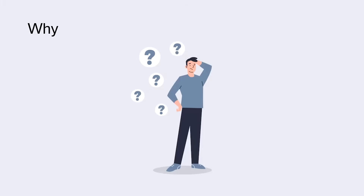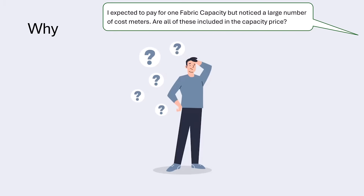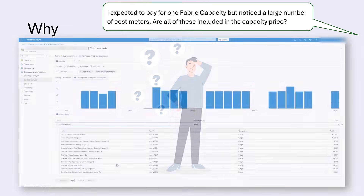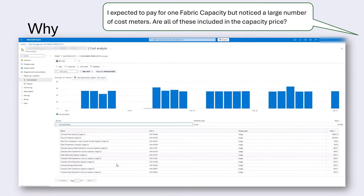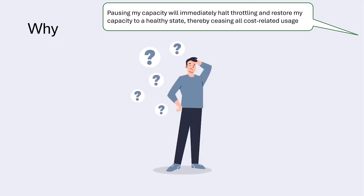We know cost transparency matters. Many users have questions or misconceptions around Fabric billing. Maybe you expected to pay for one Fabric capacity, but instead saw a confusing list of cost meters. Are all those meters included in your capacity price, or are there hidden extra charges? Sometimes it's unclear which costs are bundled and which are billed separately — like One Lake Storage, Spark Autoscale, or the new Warehouse Autoscale billing. There are also reservations and CU meters to consider. FCA helps you cut through the confusion.